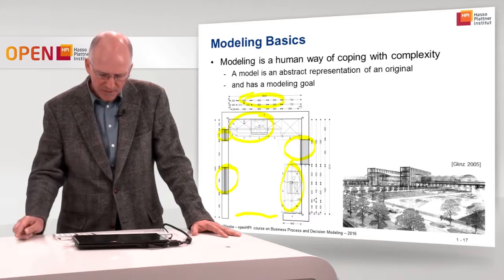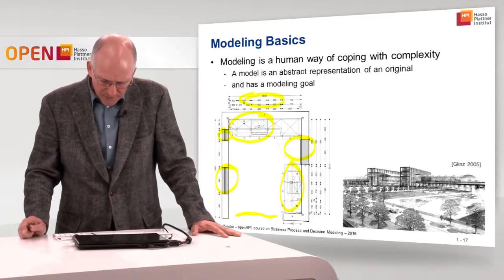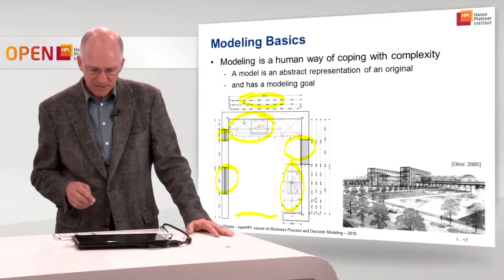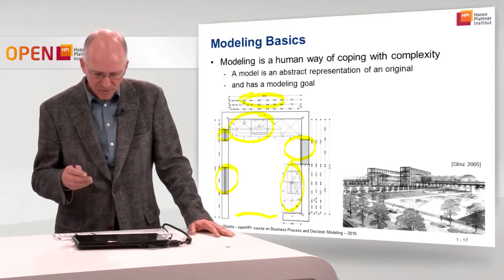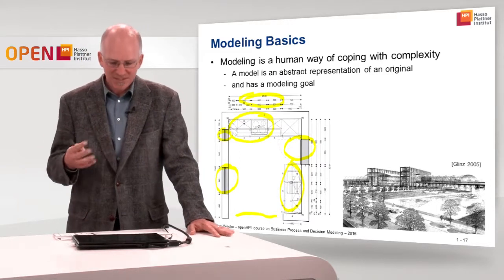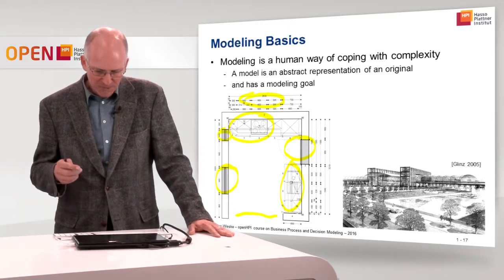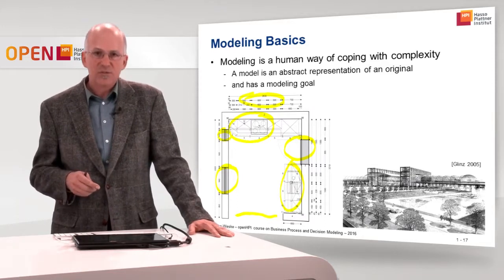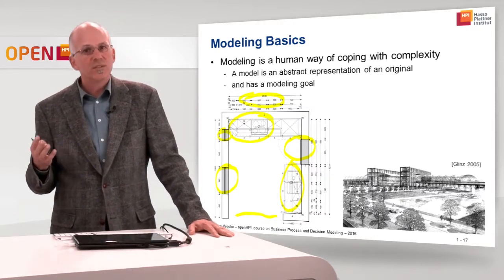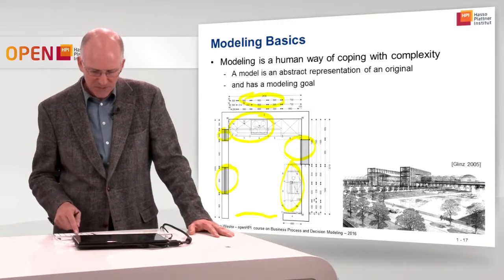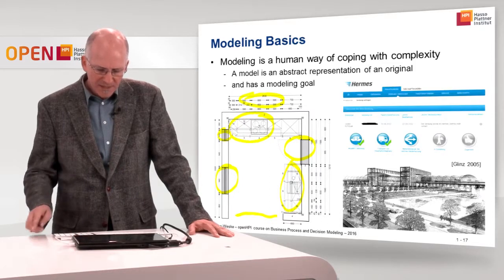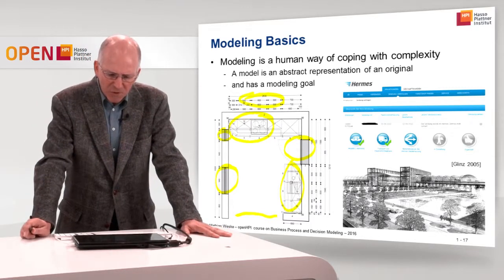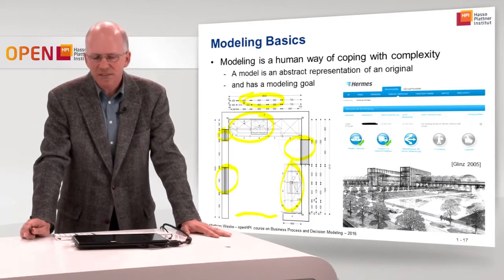Another example of a model is this architectural drawing of the main train station in Berlin, which was drawn even before the train station was built. So it's an architectural drawing of the main train station in Berlin at a point in time when the train station was not actually built. Here we also have a model, and this is a representation of a transportation process.